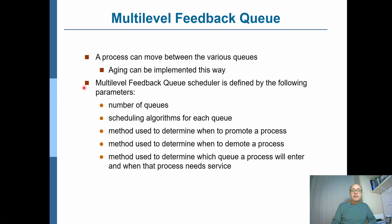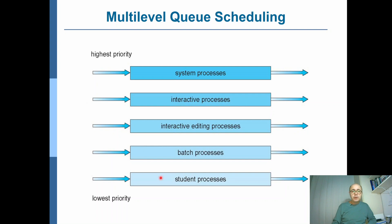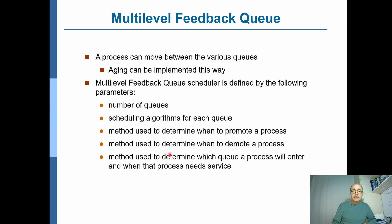The multi-level feedback queue scheduler is defined by: the number of queues in the system; the scheduling algorithm used for each queue — round robin, FCFS, shortest remaining time first, etc.; how you promote a process from a lower-priority queue to a higher-priority queue; how you demote a process from a higher-priority queue to a lower one; and which queue a process enters when it first arrives in the system and when it needs service.